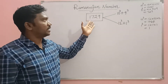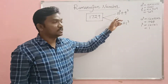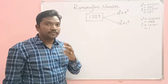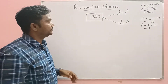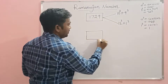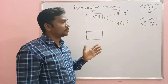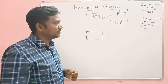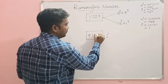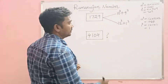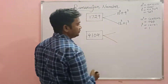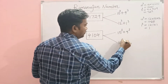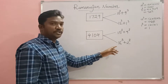So 1729 is the least positive integer which can be expressed as the sum of two different cubes in two different ways. Now, what is the next integer that can also be expressed as the sum of two different cubes in two different ways? That is 4104. This can be expressed as 15 cube plus 9 cube, and also as 16 cube plus 2 cube.